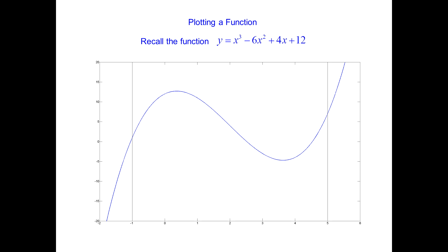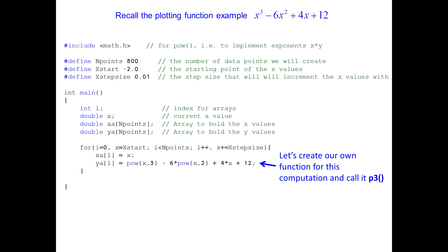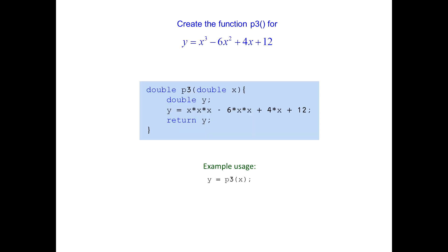Looking at the function from last week — we had a third order polynomial — we're going to take the computation part and create our own function for it, called p3. To create the function: it returns a double, we pass one argument which is x, the name is p3, and we have the parentheses followed by curly braces showing the body of the function.